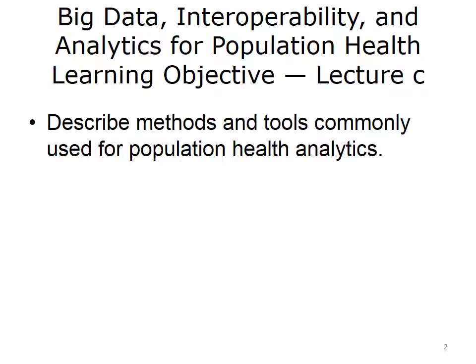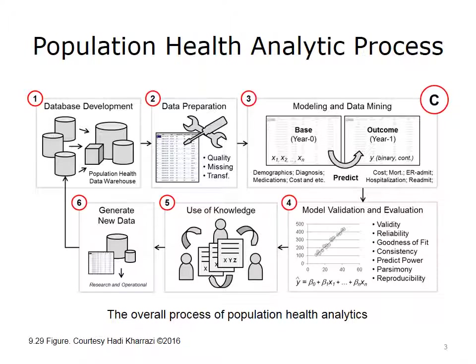This lecture discusses the common approaches used by population health analysts. This diagram shows the overall steps involved in developing analytics for population health management and risk stratification. As shown in Box 1, the first stage involves the merging of various data sets and developing a centralized or distributed population health data warehouse. The second step, depicted by Box 2, includes various processes to prepare the data for analysis, such as fixing data quality issues, deleting or imputing the missing data, and transforming the data to meet the assumptions of a given analytical approach.